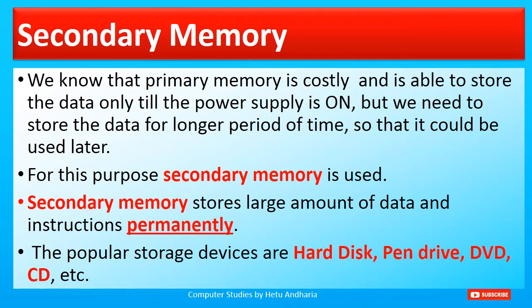Secondary memory stores large amounts of data and instructions permanently. We compared the size of RAM — 4 GB primary memory — versus 1 TB hard disk as secondary memory. Secondary memory is able to store large amounts of data permanently. The popular storage devices are hard disk, pen drive, DVD, CD, etc.